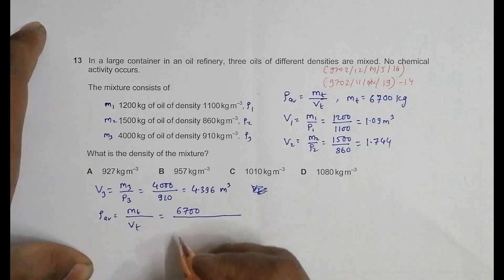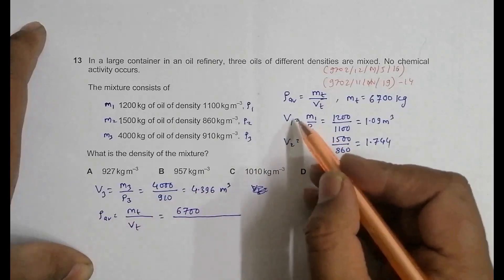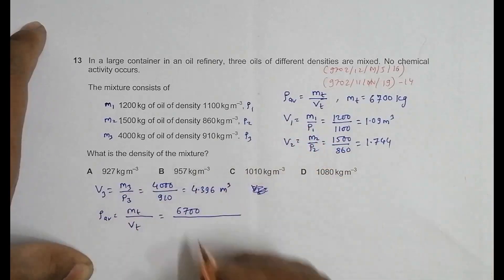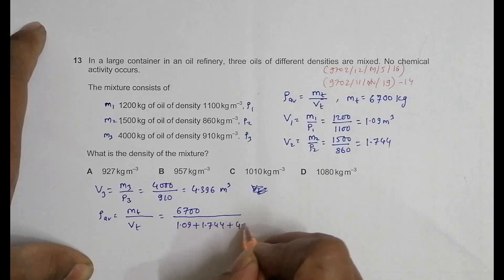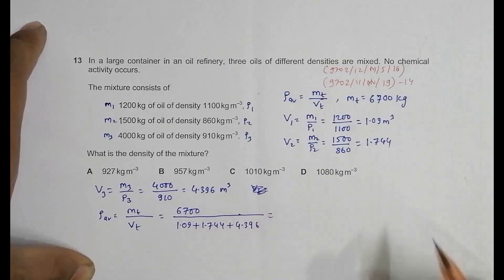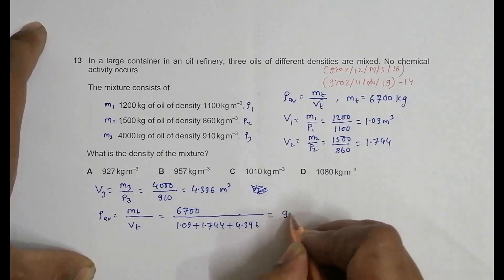So we will do V1 plus V2 plus V3: 1.09 plus 1.744 plus 4.396. When I do it in the calculator, it's 6700 divided by bracket 1.09 plus 1.744 plus 4.396 close bracket equals...